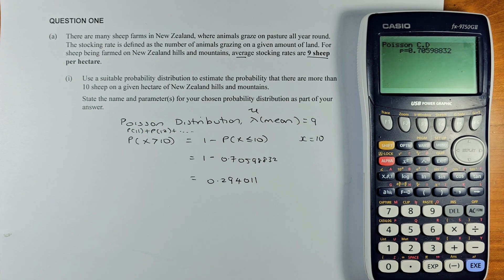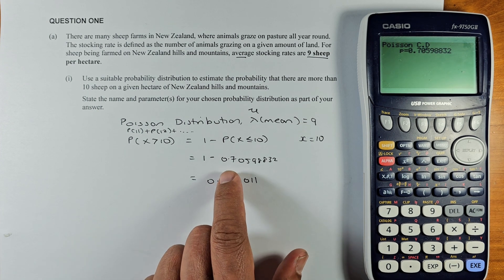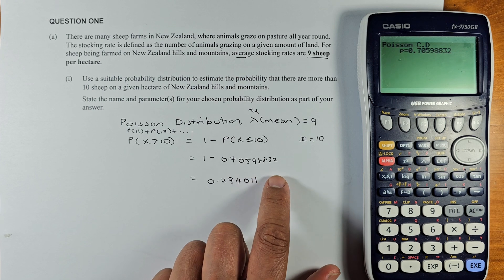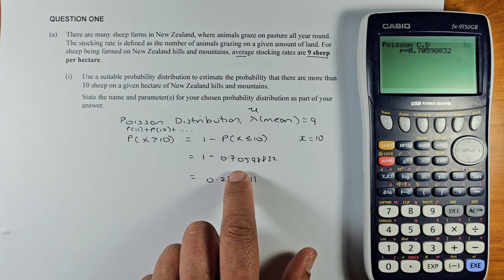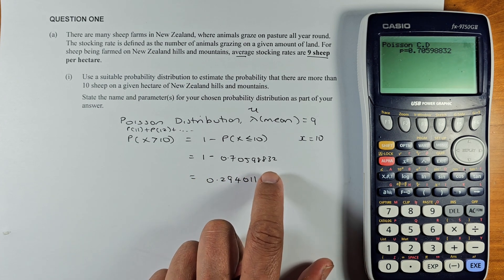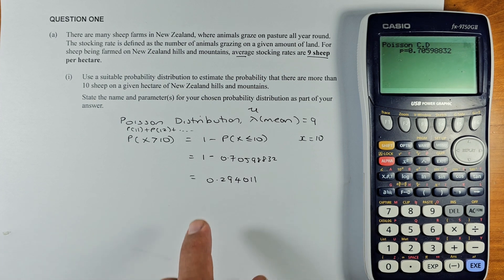And then you press one more time execute. And the answer is going to be 0.70598832. So 1 minus 0.70598832 is going to be 0.294011.